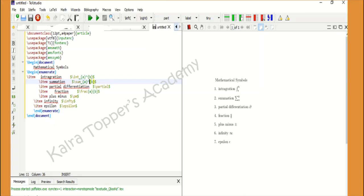You can see here that for integration sign I have written dollar symbol backslash int underscore curly bracket a close curly bracket, raised to the power curly bracket b close bracket, and dollar symbol. After running you can see on the other side of the screen that the integration sign is being printed here.